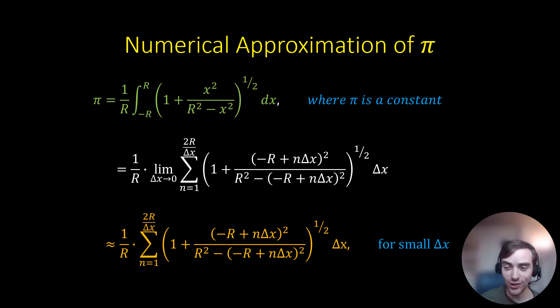In general, the smaller the value of delta x, the closer the approximation will be to the true value.